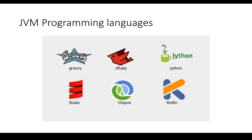The programming languages which are JVM-based include Groovy, Ruby, Jython, Scala, Clojure, and Kotlin, all on top of Java. Java is probably the first programming language built on top of JVM. Developing in Java is quite cumbersome compared to other programming languages, some of which are functional programming languages where you can express a lot in very few lines of code.